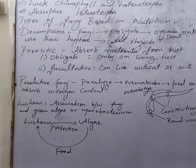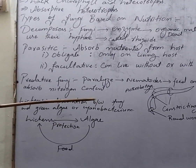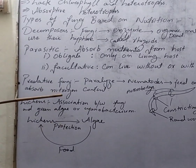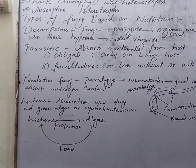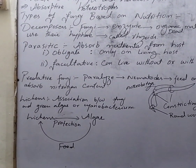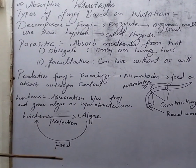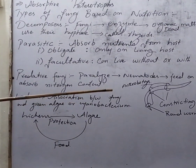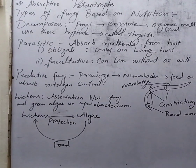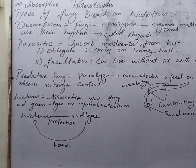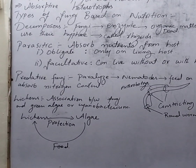The enzyme is released, causing decay, and the nitrogen content is then used. This is described as the predatory mode involving nematodes. An important example is Arthrobotrys, which is a fungus that feeds on nematodes.